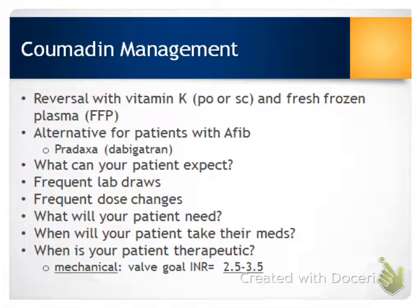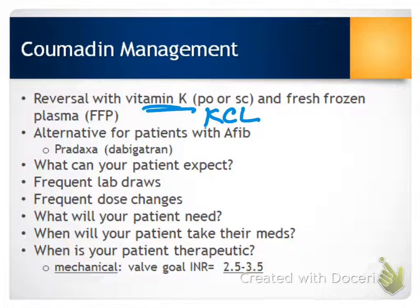For patients on a mechanical valve who are taking Coumadin or Warfarin, important points include the significant increase in risk for bleeding, bruising, and internal hemorrhage from traumatic injury. If levels become too high, reversal agents are available: Vitamin K — not to be confused with potassium (KCl) — and fresh frozen plasma. An alternative for patients who also have AFib might be Pradaxa.